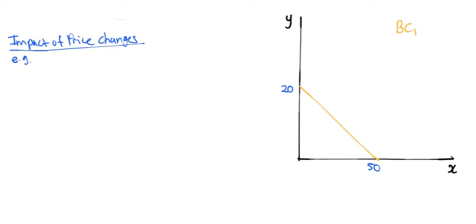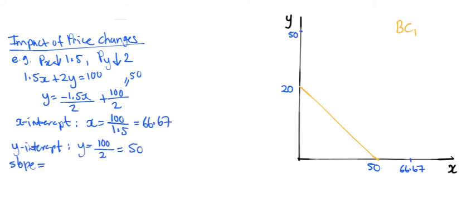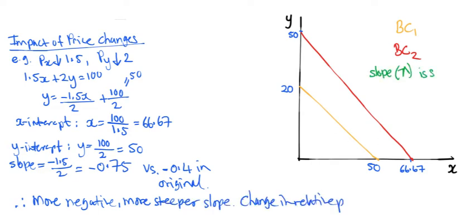Now let's assume the price of X reduces from $2 to $1.50. And the price of Y reduces from $5 to $2. The budget remains at $100. The equation becomes 1.5X plus 2Y equals 100. And Y becomes negative 1.5X divided by 2 plus 50. Here the x-intercept is 66.67, and the y-intercept is 50. The slope is now negative 0.75, which means even more negative or more steeper. The relative price ratio has changed, hence the slope has changed.